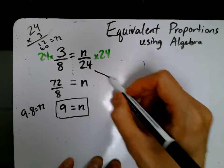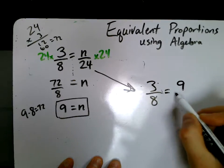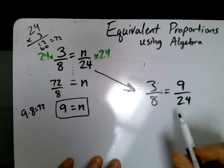So if we go back up to our equivalent fractions up here, we have 3 over 8 equals 9 over 24. Thank you.